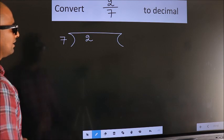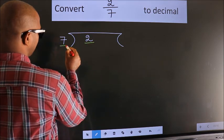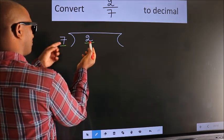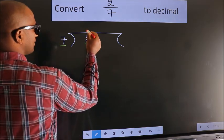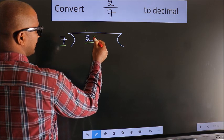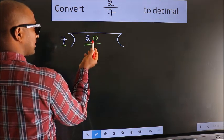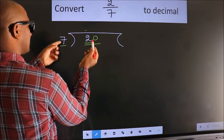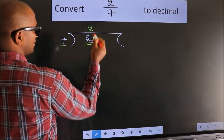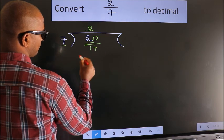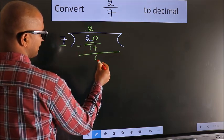Next. Here we have 2, here 7. 2 is smaller than 7, so what we should do is put a dot here and take 0 here, making it 20. A number close to 20 in the 7 table is 7 twos 14. Now we subtract and we get 6.